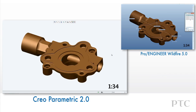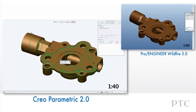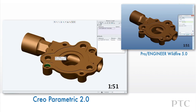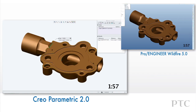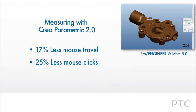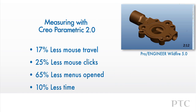In Wildfire 5, we would have to close out the dialog and start all over. We've shown some of the key highlights in measuring geometry with Creo Parametric, including new capabilities and streamlined workflows. The result is improved design productivity, as even in this short comparison, I save some 10% of the time taken to achieve the same result with Creo Parametric compared to ProEngineer Wildfire.